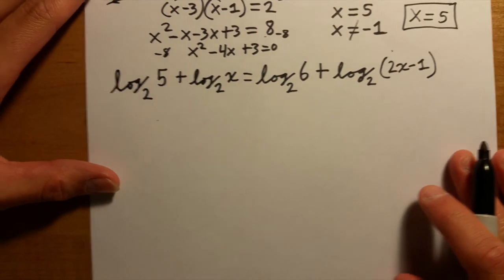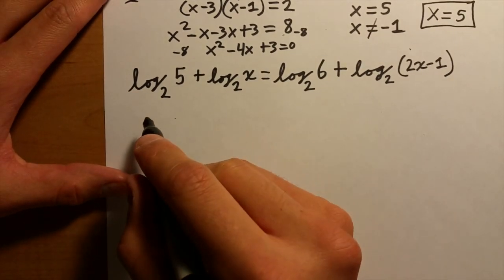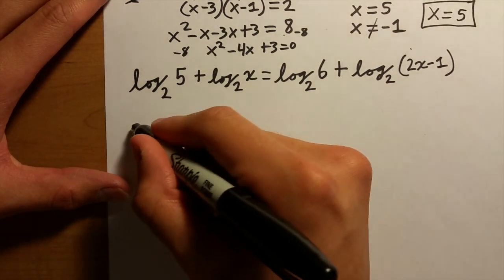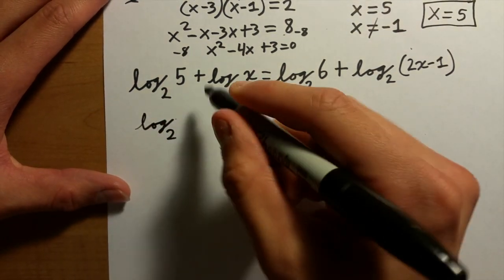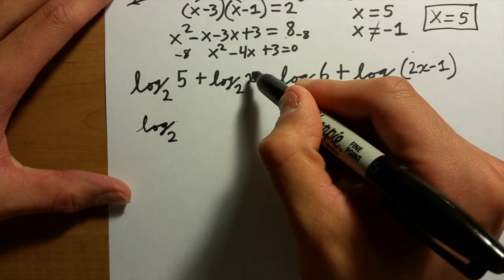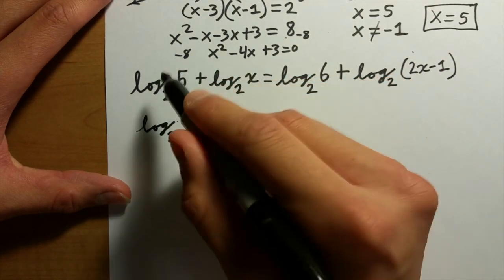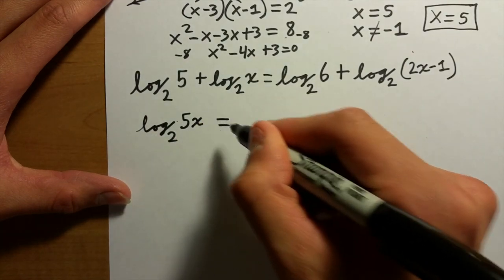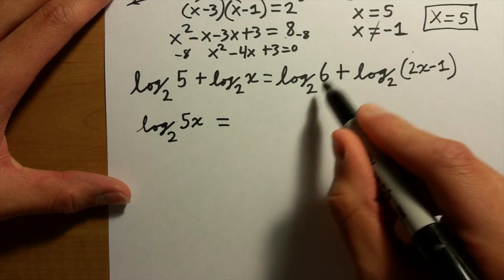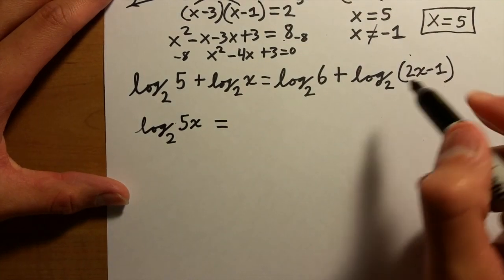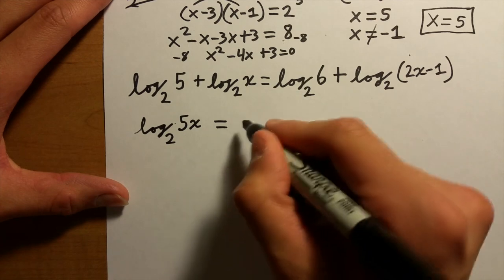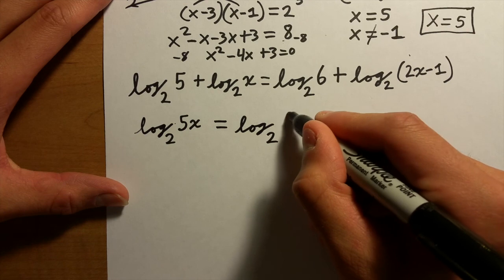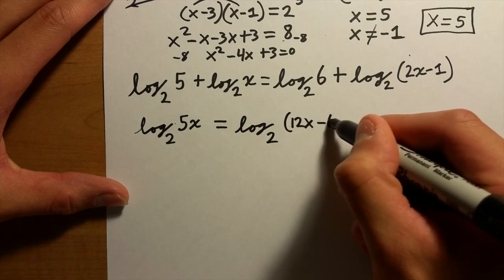This one you just do the same thing, except everything in this case has base 2, so it's actually a little bit easier. You can rewrite it as log₂(5x) since they both have the same base and they're being added, so they're being multiplied together. So it's log₂(5x) = log₂(6) + log₂(2x-1), which becomes log₂(6 · (2x-1)) = log₂(12x - 6).